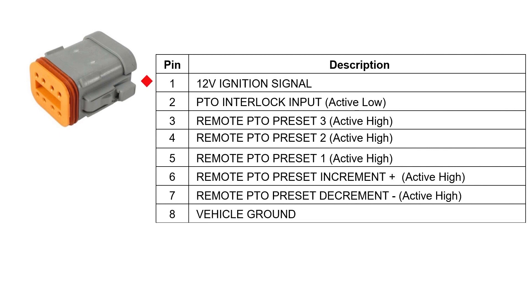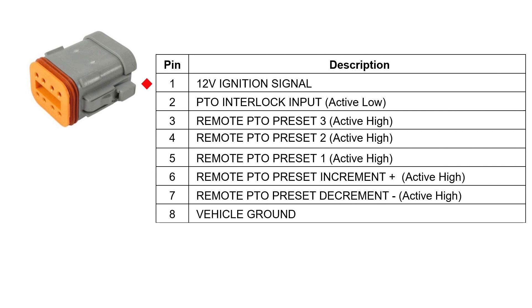Pin 1 provides a 12-volt signal with the ignition on. Pin 2 is used to control the custom interlock function and is active low, which means there is a constant voltage to the pin which needs to be grounded using pin 8 in order to activate the function. Pins 3-7 control preset functions which are active high, which means they are activated when connected to a voltage signal from pin 1.